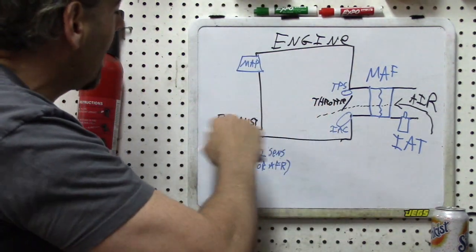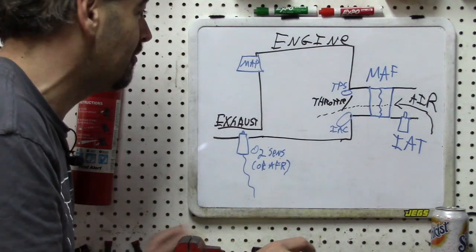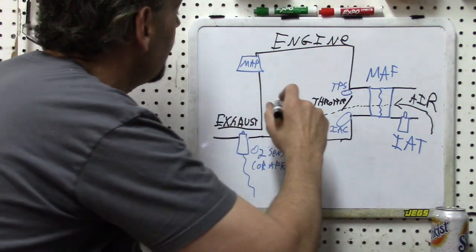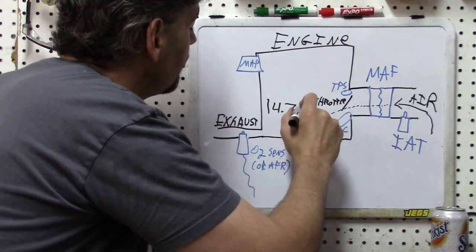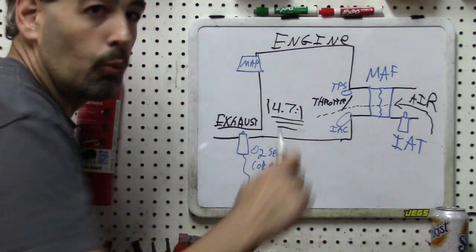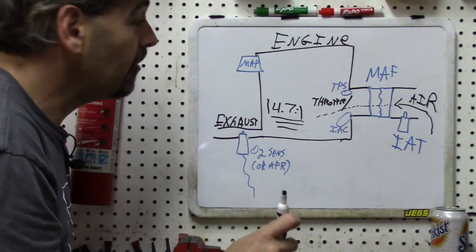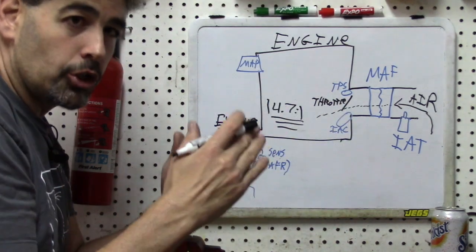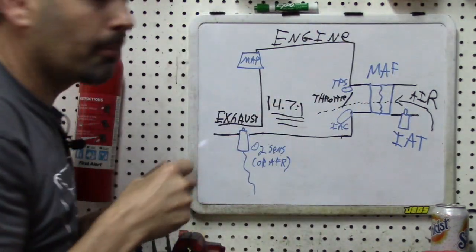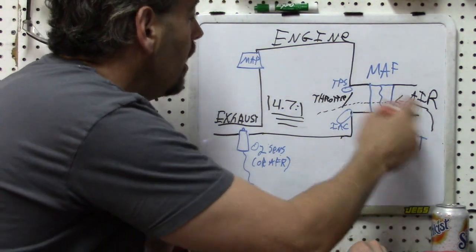We've got our engine with the throttle and exhaust. Air comes into the engine, and the engine is pretty much always going to try to maintain a stoichiometric ratio — 14.7 parts air to one part fuel. In order for an engine to do this, it is essential that it knows how much air is coming in, and then it adjusts fuel delivery by lengthening or shortening the injector pulse length to match that ratio.